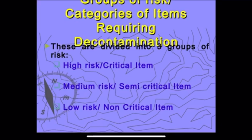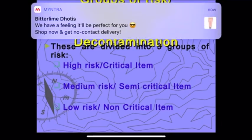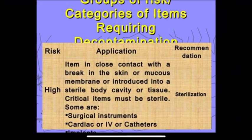The three categories are: high risk and critical items, medium risk and semi-critical items, and low risk and non-critical items. We will study the risk according to the equipment and which method is used for decontamination.